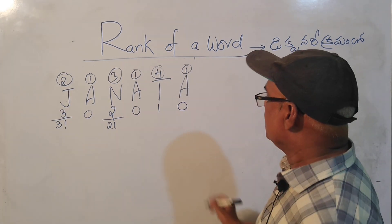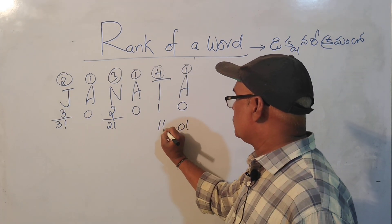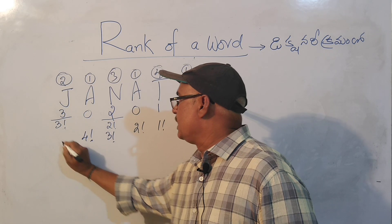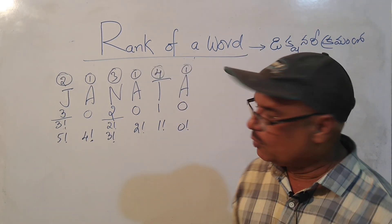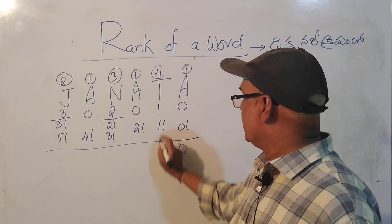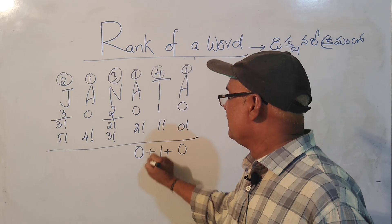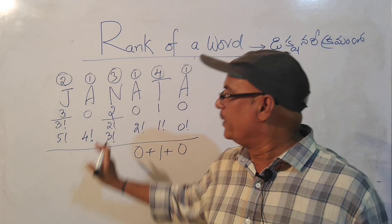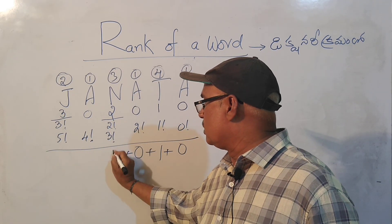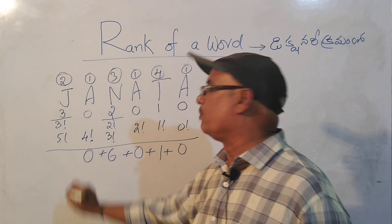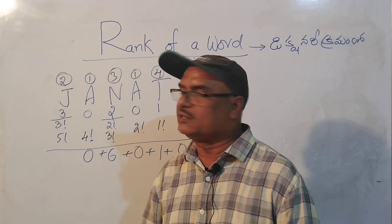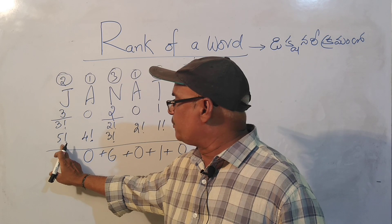So this is 0 factorial, 1 factorial, 2 factorial, 3 factorial, 4 factorial, 5 factorial — okay. 1, 1, 2, 2 — 2 factorial plus 3 factorial is 6 — 3 by 3 factorial is 3 by 6, and half, half — this is 5 factorial.